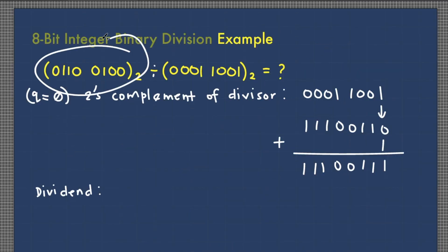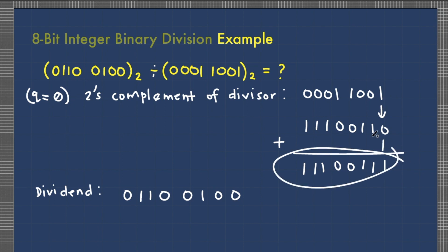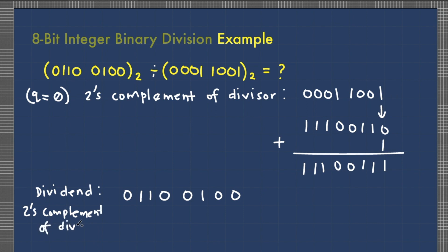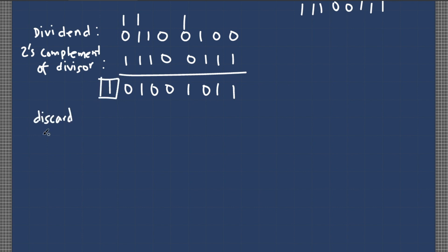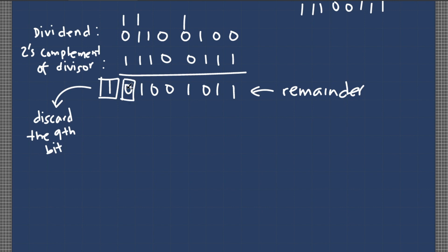The dividend is 01100100. The two's complement of the divisor is 11100111. Adding them: 0+1=1, 0+1=1, 1+1=0 carry 1, 1+0+0=1, 0+0=0, 1+1=0 carry 1, 1+1+1=1 carry 1, 1+1=0 carry 1. We discard the 9th carry bit. This gives us our remainder, which has a sign bit of 0, indicating the remainder is positive.